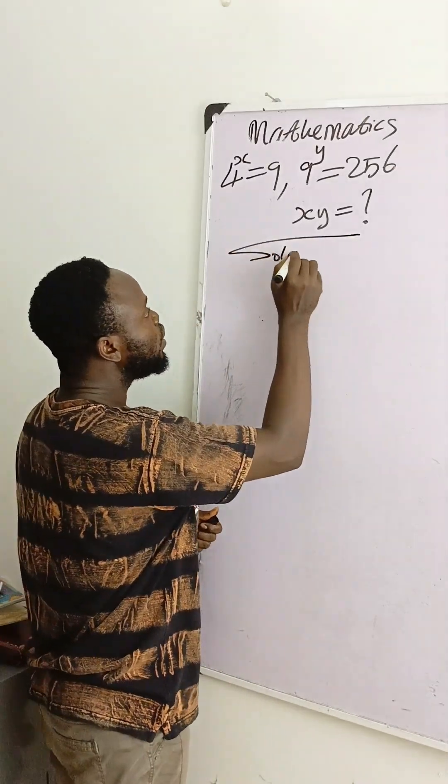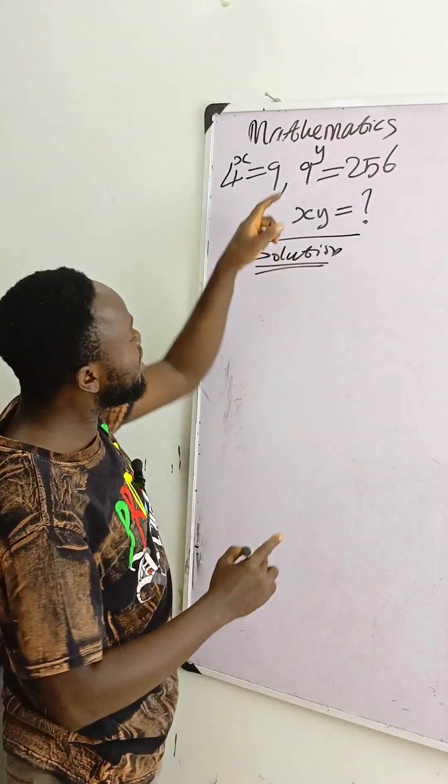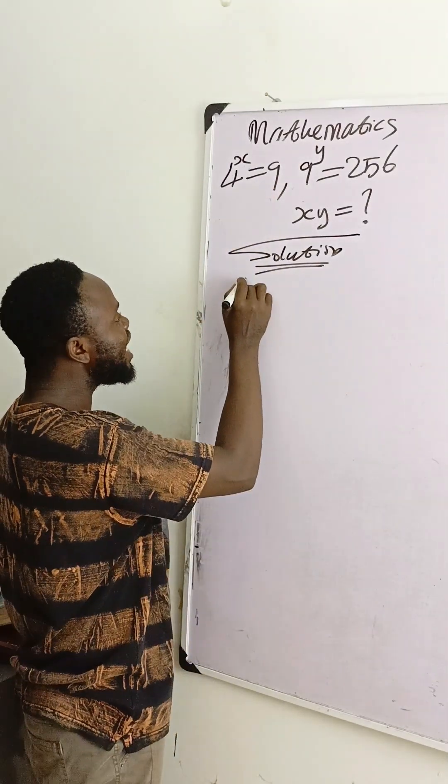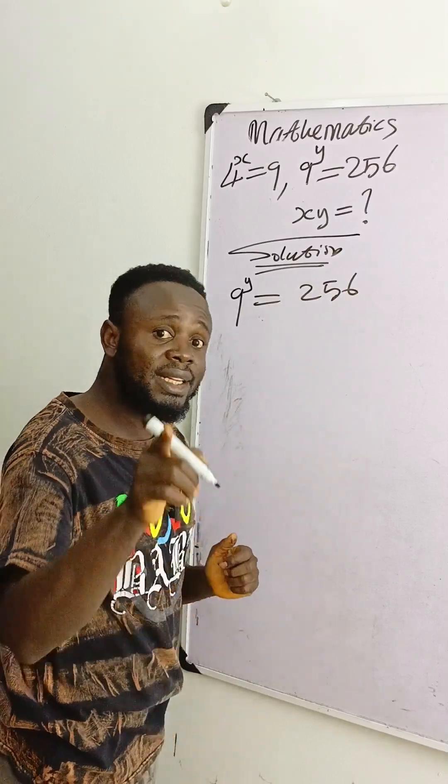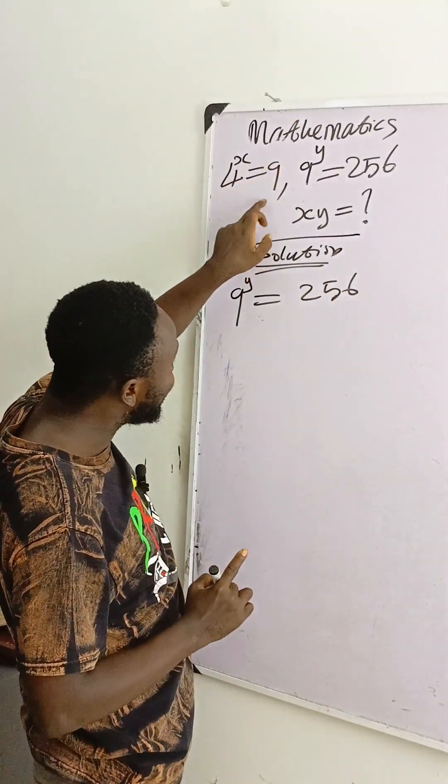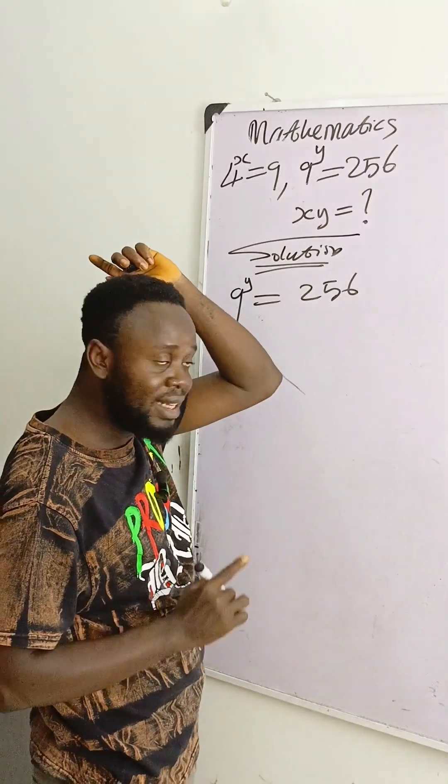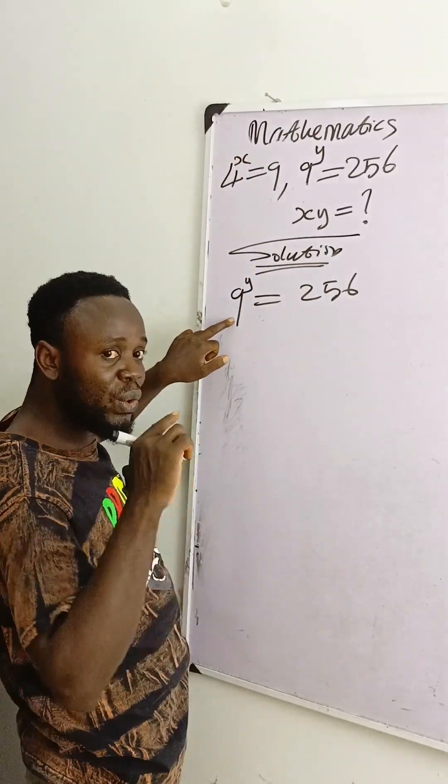If I write the solution to this now... the question said, okay let me repeat: 9 raised to power y is equal to 256. And remember that 4 raised to power x is equal to 9. That means this particular 9 is equal to 4 raised to power x. Wherever you see 9, you write 4 raised to power x.